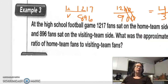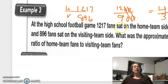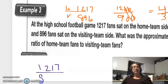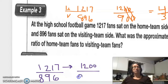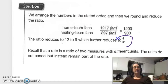At a high school football game, 1,217 fans sat on the home team side and 896 fans sat on the visiting team side. What was the approximate ratio of home team fans to visiting team fans? 1,217 is close to 1,200 and 896 is close to 900, so we cancel zeros — 12 to 9 is the same as four-thirds, or four to three.